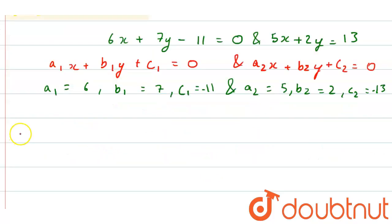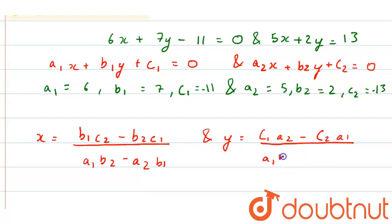Now we can write the formula: x equals b1c2 minus b2c1 divided by a1b2 minus a2b1, and y as c1a2 minus c2a1 divided by a1b2 minus a2b1.